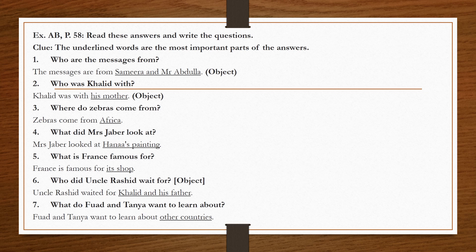Number six: 'Uncle Rashid waited for Khalid and his father.' 'Khalid and his father' are underlined — they are people, so we use 'who.' No auxiliary exists but the verb is past tense, so we use 'did.' Result: 'Who did Uncle Rashid wait for?'